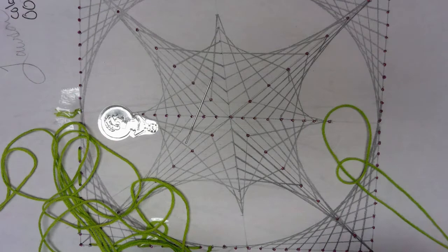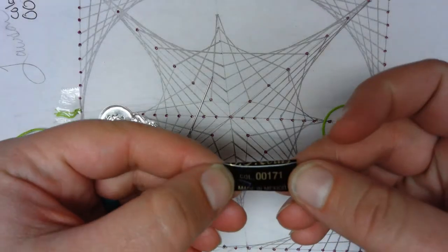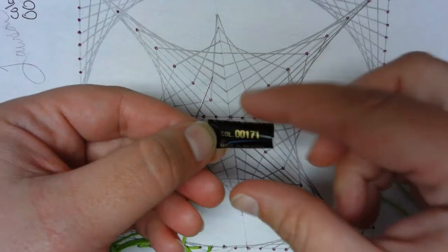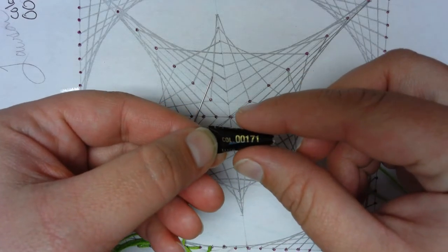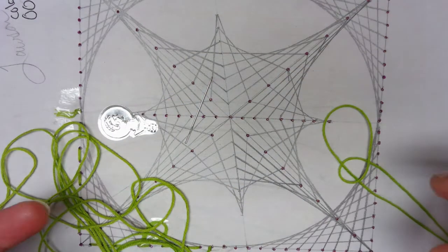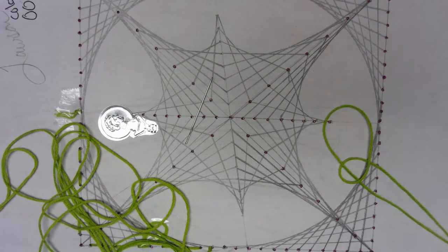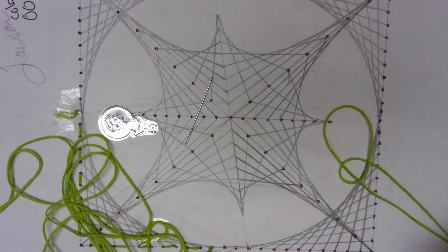It's now time to select the color thread you want to use, and we're going to have to use a needle. Once you select the color thread you want to use, I would write down the number that's on the sleeve that holds the skein of thread together. My number is 00171. That way, if I happen to run out of thread, I'll be able to purchase more thread that's the exact same color.